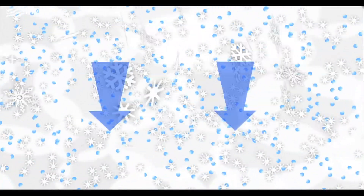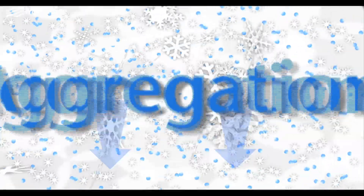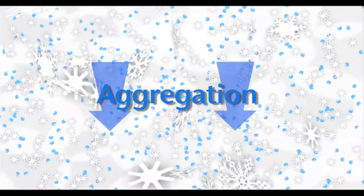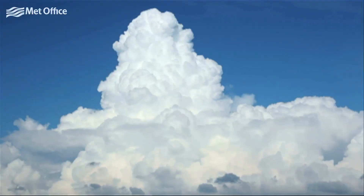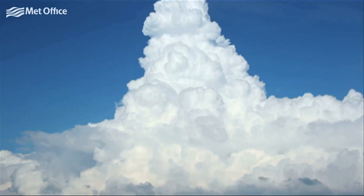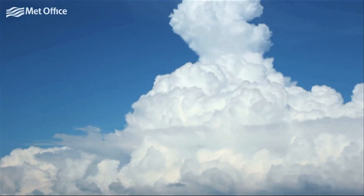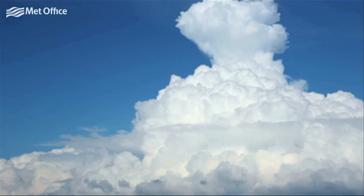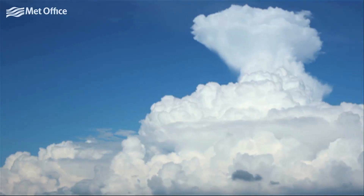Then, as the crystals drift through the cloud, they connect with other ice crystals in a process called aggregation, and large snowflakes are formed. This process of aggregation can take place in any fairly deep cloud, whether it's formed in layers along a weather front, or by the convective bubbling-up process.